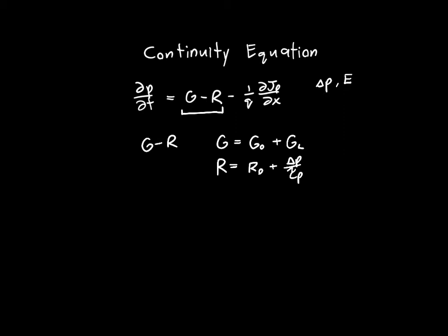If we take G minus R, we know that G0 and R0 must be equal to each other because at equilibrium, by definition, there's no net increase or decrease in carriers. So these two will cancel out and we'll be left with GL minus delta p over tau p. In general, delta p might be a function of x, and GL might also be a function of x, but that's implied so I'm going to omit the notation.